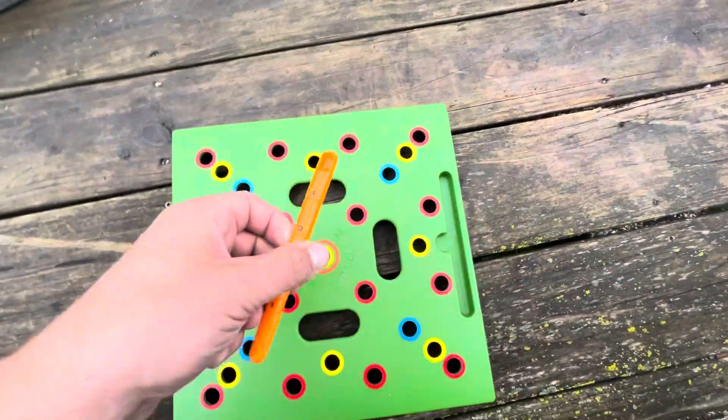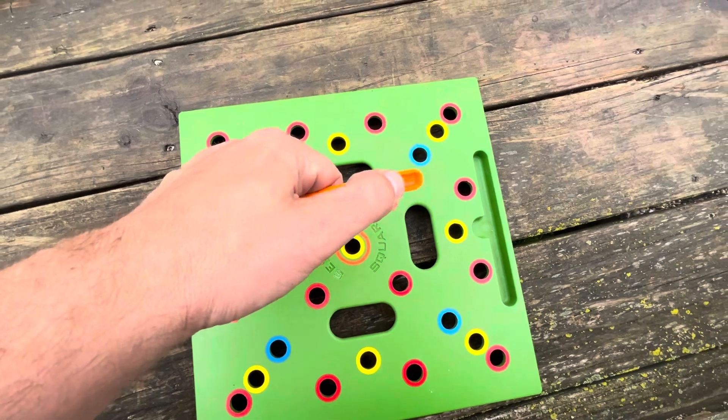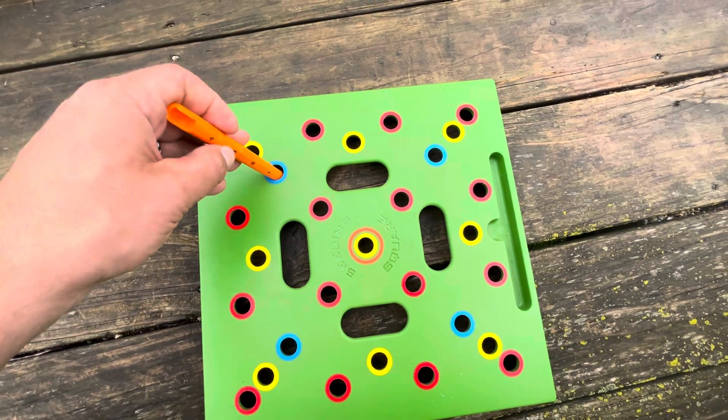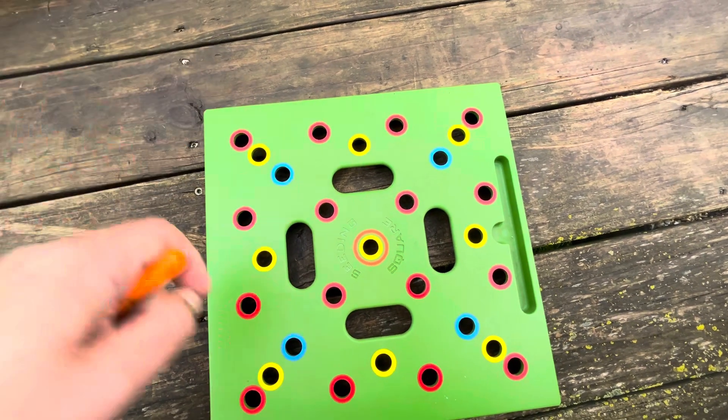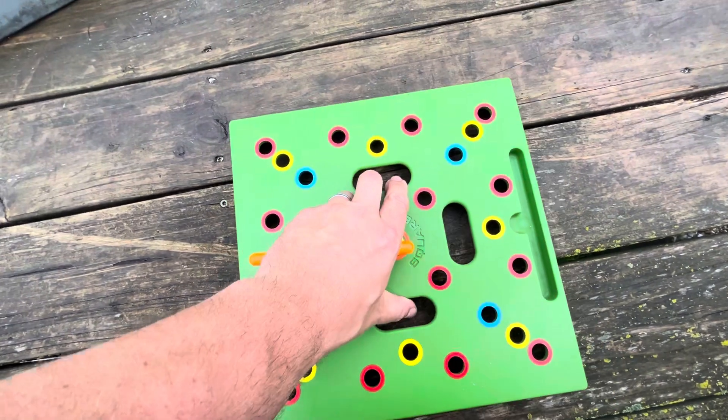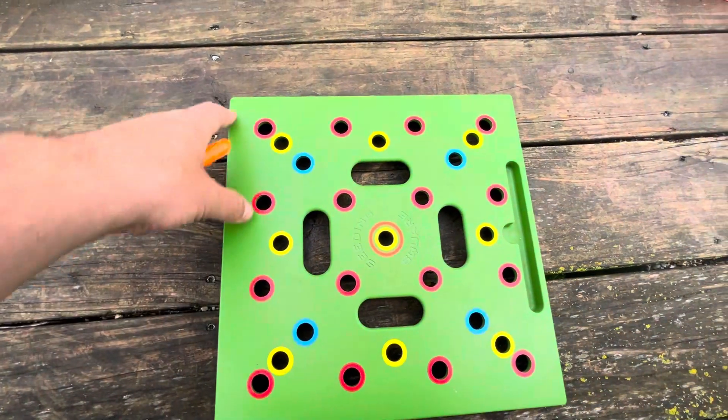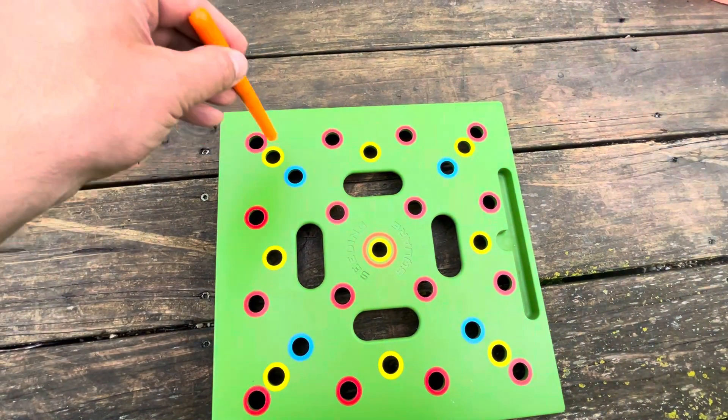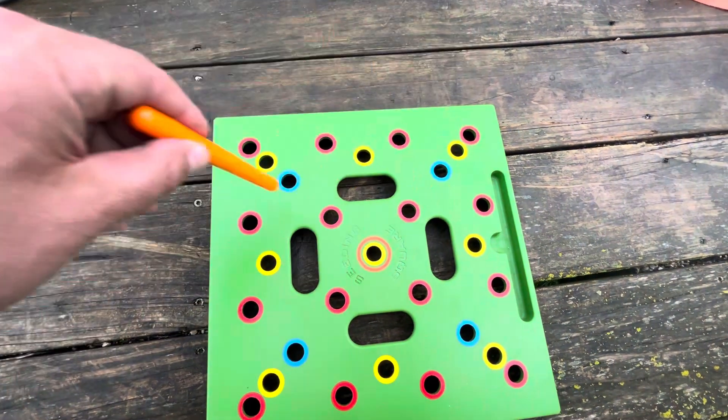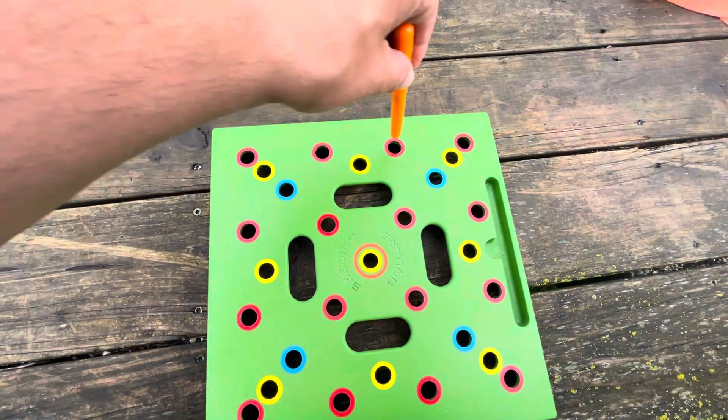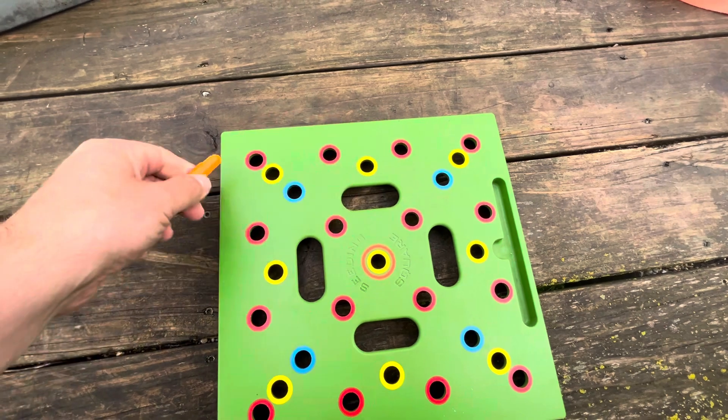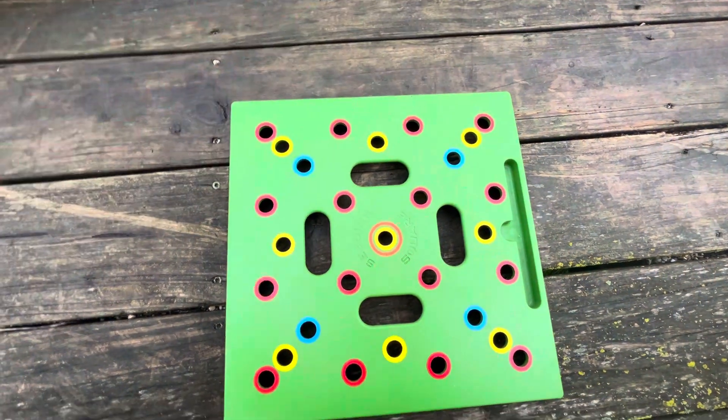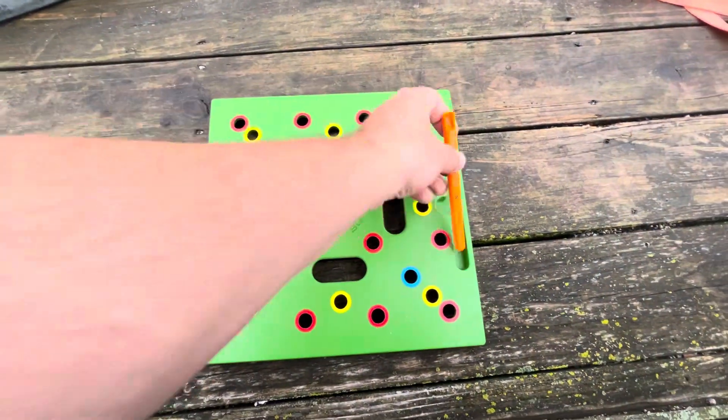It comes with this tool that helps you scoop up the seeds, but you can also use the depth gauge. You push this down into your dirt, and depending on what type of plant you're planting, you'll be able to push down for the depth and then drop the seed into the hole.